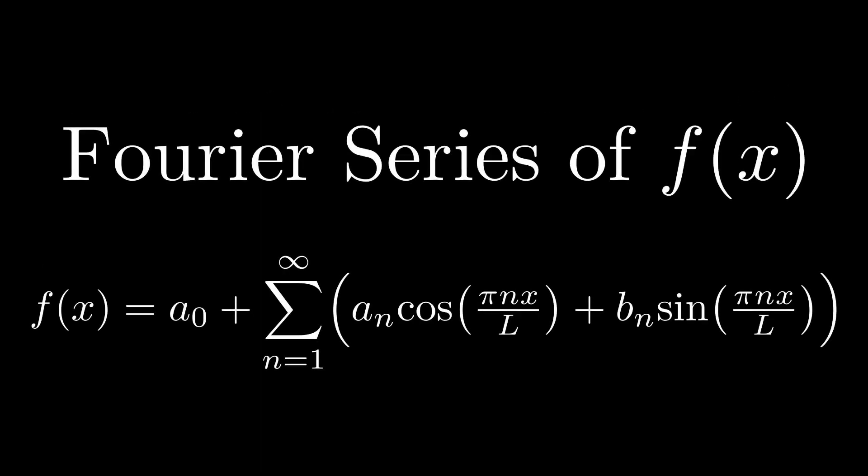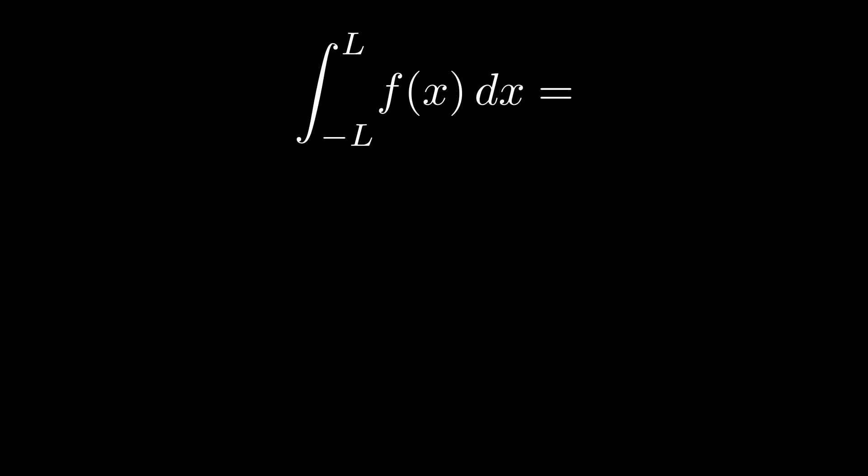Now suppose we want to find the constant term a sub zero. How would we go about this? It might seem like an odd thing to do, but the first step I'm going to take is to integrate both sides of the equation from negative l to l.